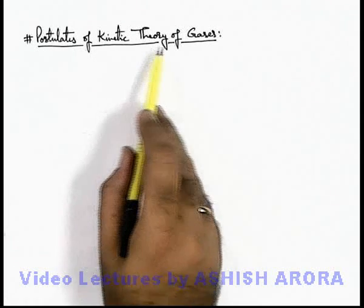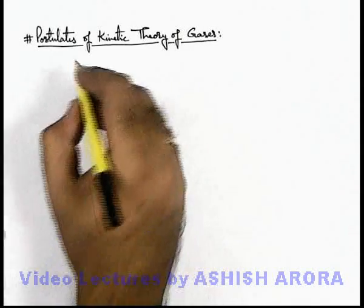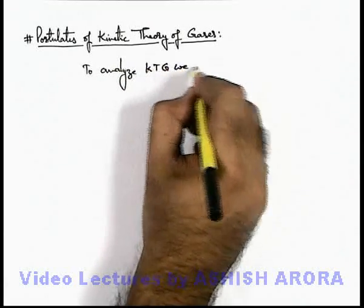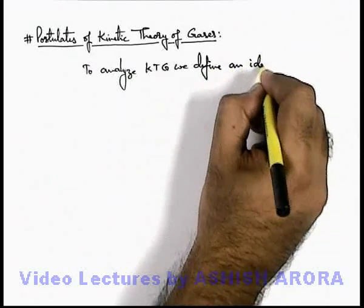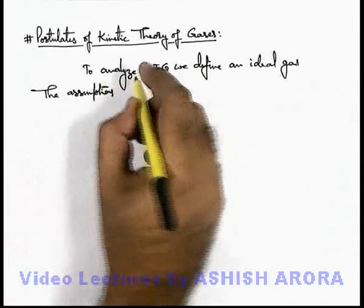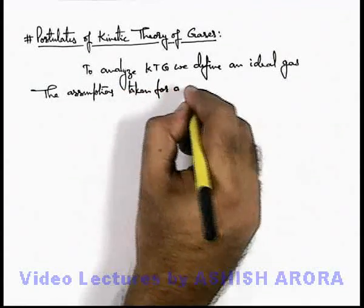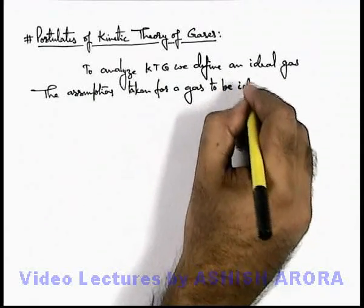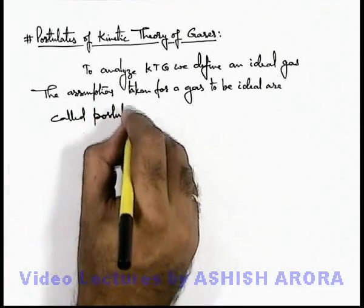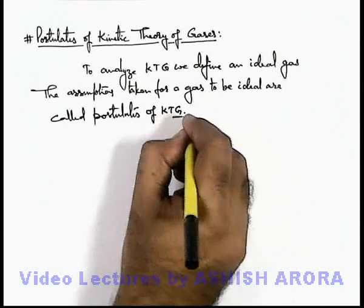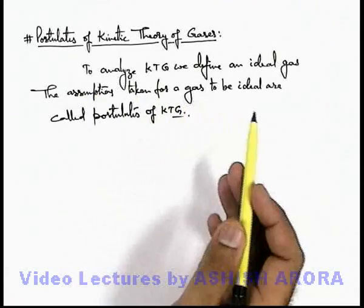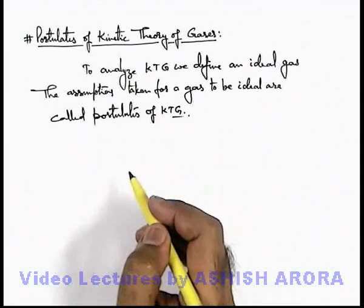Let's discuss the postulates of kinetic theory of gases. To analyze kinetic theory of gases, we define an ideal gas. The assumptions taken for a gas to be ideal are called postulates of kinetic theory of gases. There are many assumptions we consider for a real gas so that it can be treated as an ideal gas. Let's discuss these assumptions one by one.